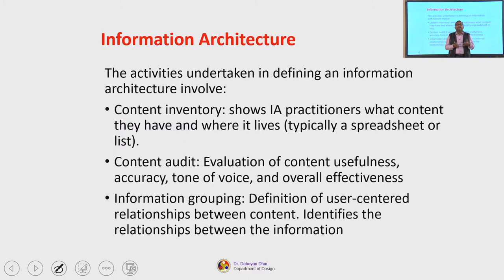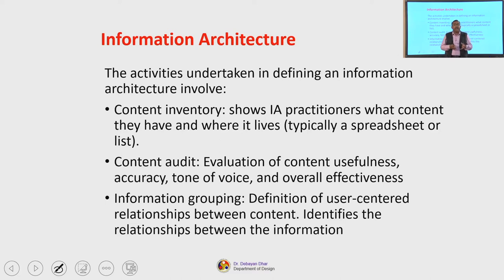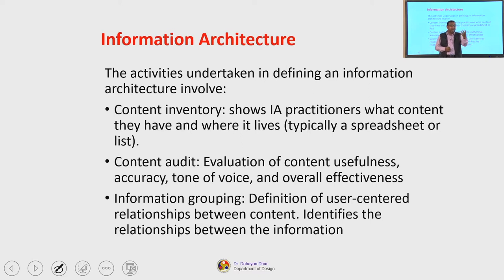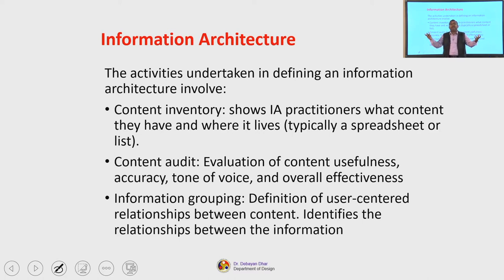The activities undertaken in defining an information architecture involve some preliminary steps. First is content inventory — showing what content the information architect practitioners have and where it lives, typically using a spreadsheet or list. Then comes content audit — evaluation of content usefulness, accuracy, tone of voice, and overall effectiveness. After that, information grouping defines user-centered relationships between content — how your user relates content A to content B, identifying the relationships between pieces of information.